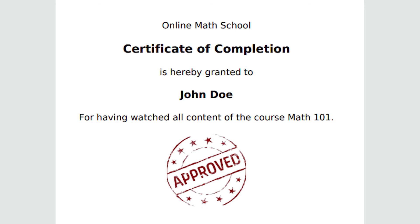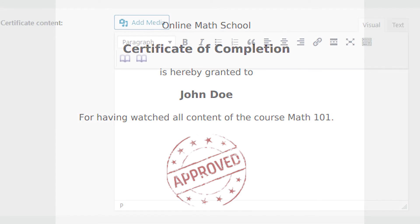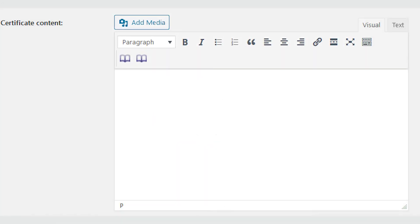Creating a certificate: each course or lesson has its own PDF certificate. You can edit the certificate with HTML content. Certificates are sent when a user watches 100% of a lesson or when the user passes the quiz. You can edit the certificate by heading to the edit page of that course or lesson and checking the Certificate Content panel.